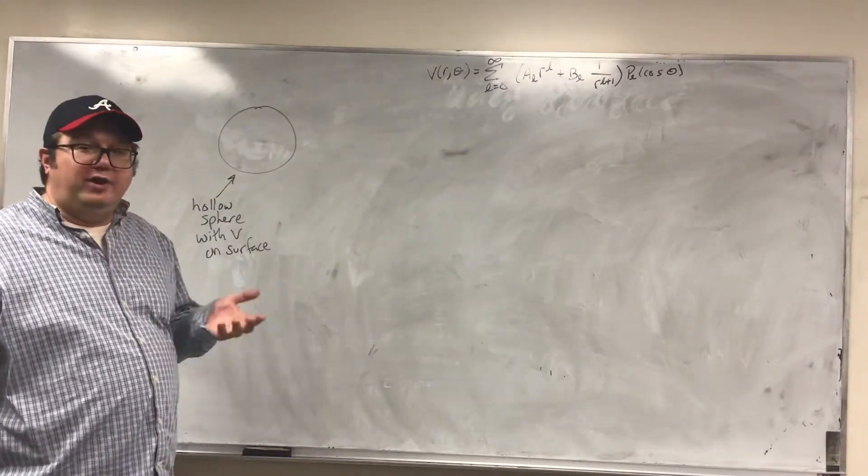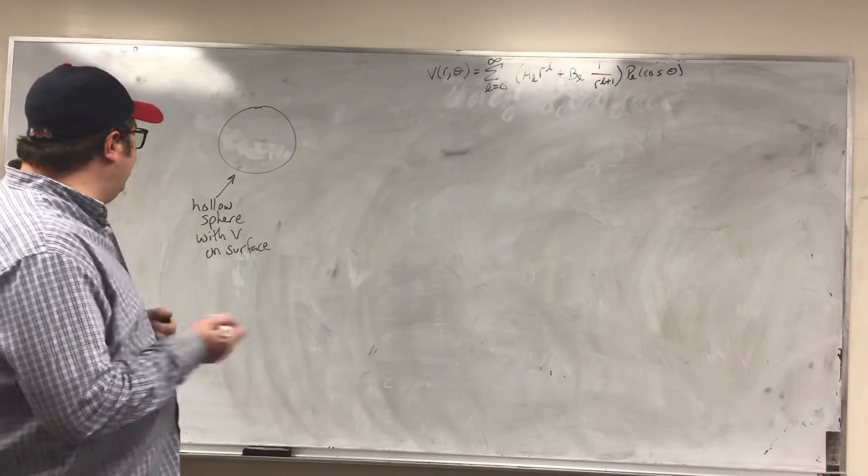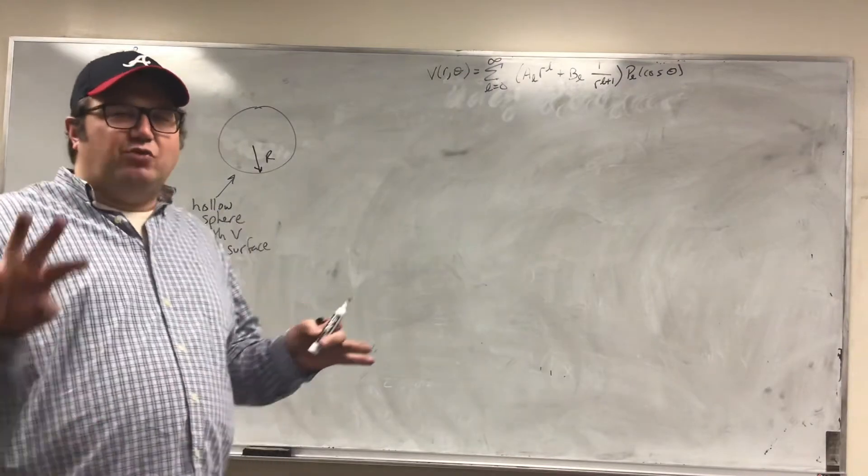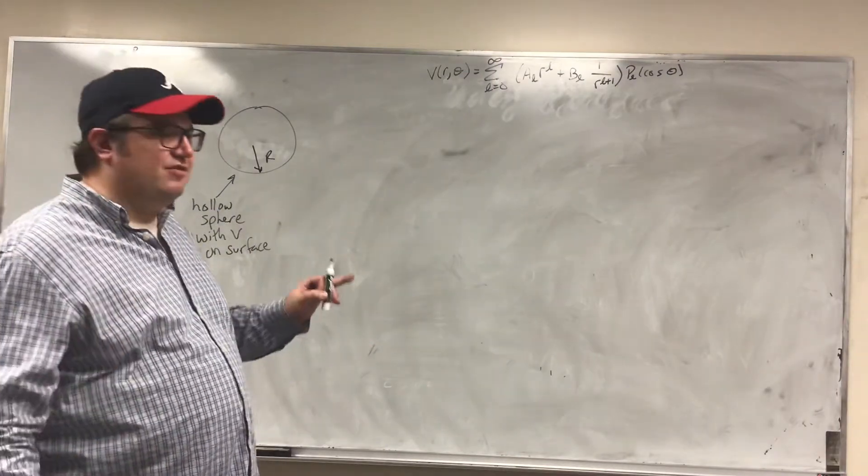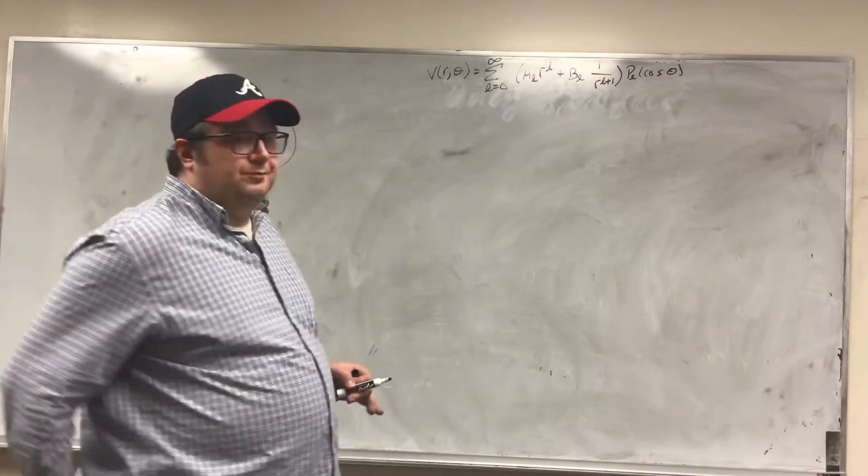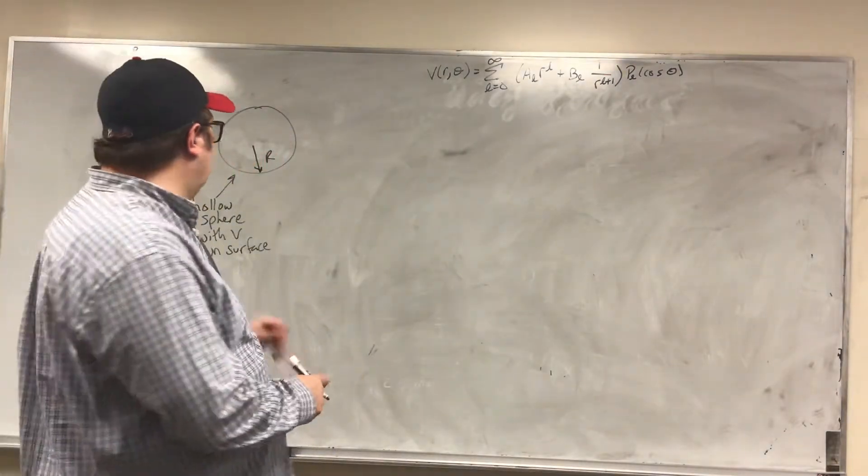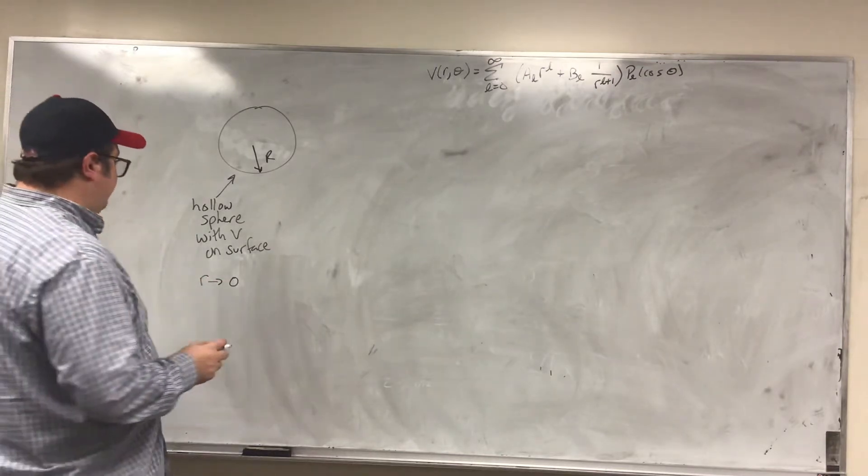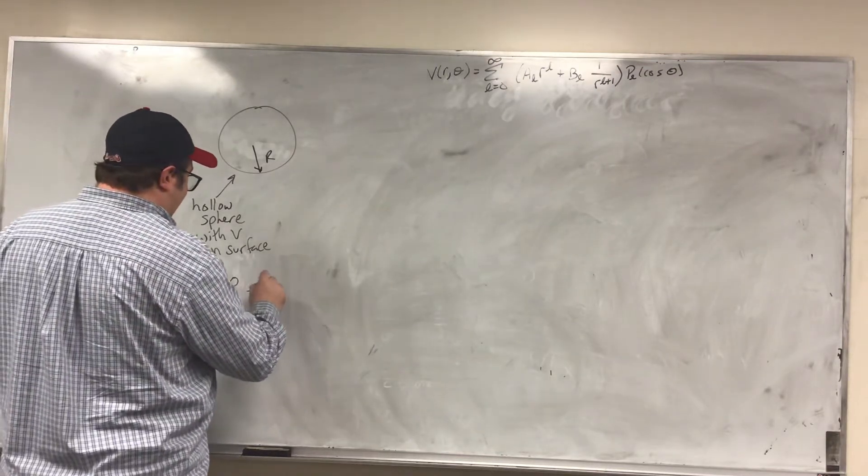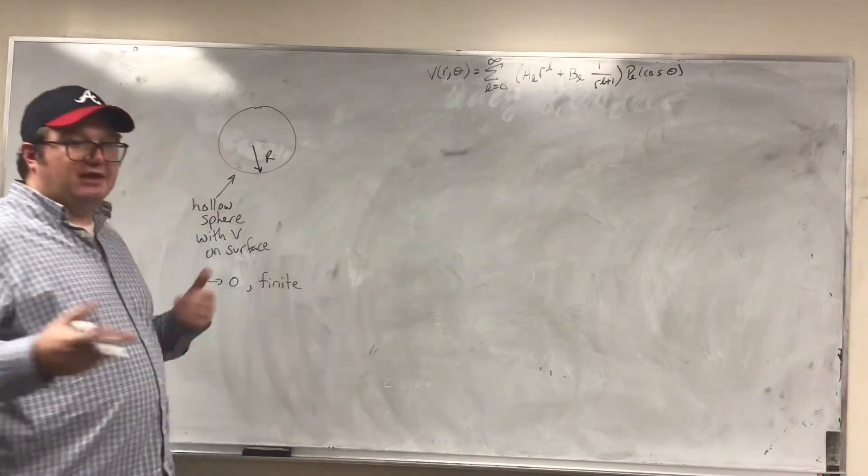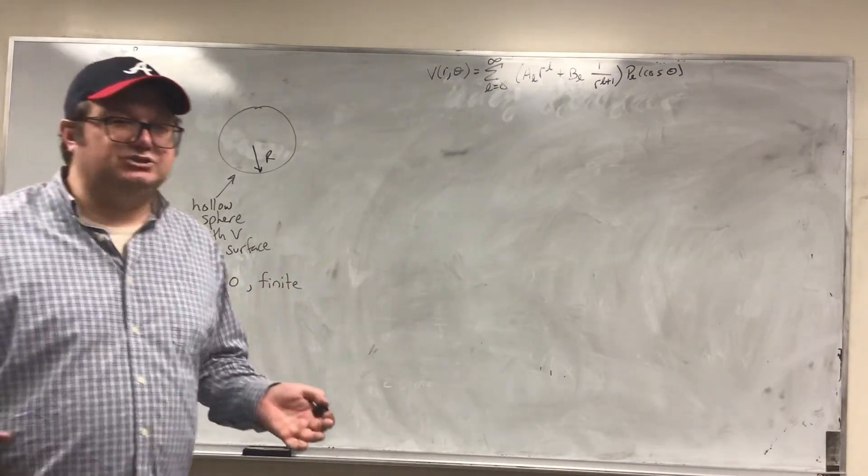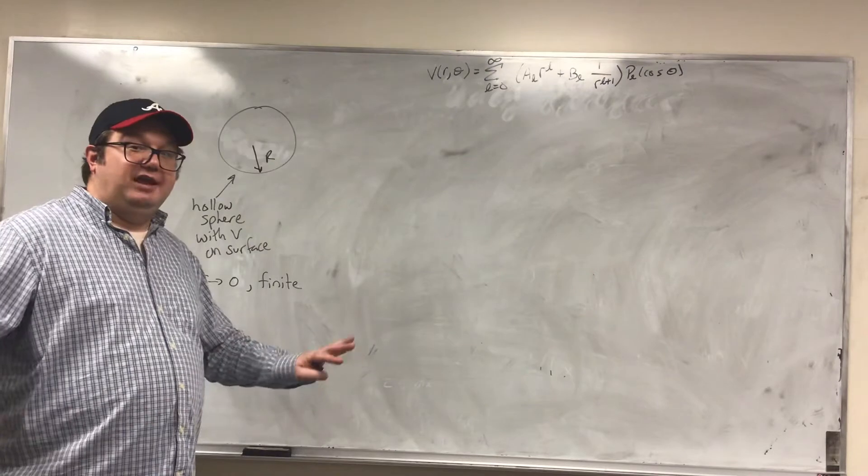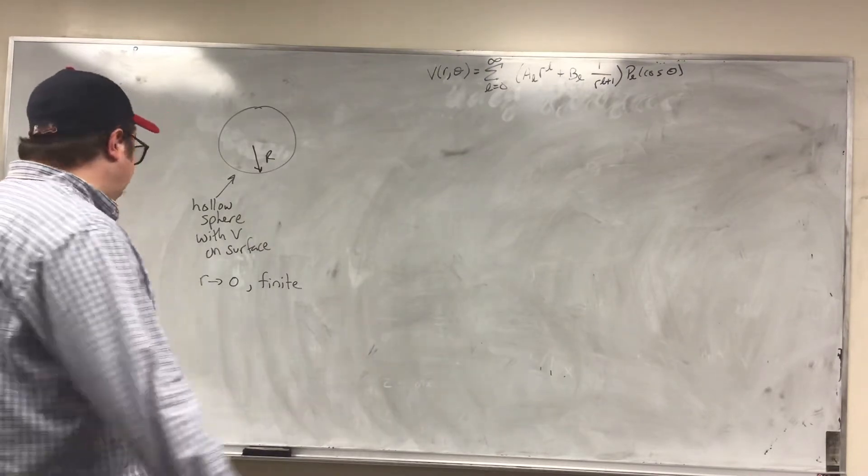I can use my boundary conditions to figure that out. So what are my boundary conditions? Well, if I know that this hollow sphere has a radius of R, I'm going to have like three to four boundary conditions. Boundary condition number one: as R goes to zero, the potential remains finite. Potential, electric potential, potential energy should remain kind of non-infinite.